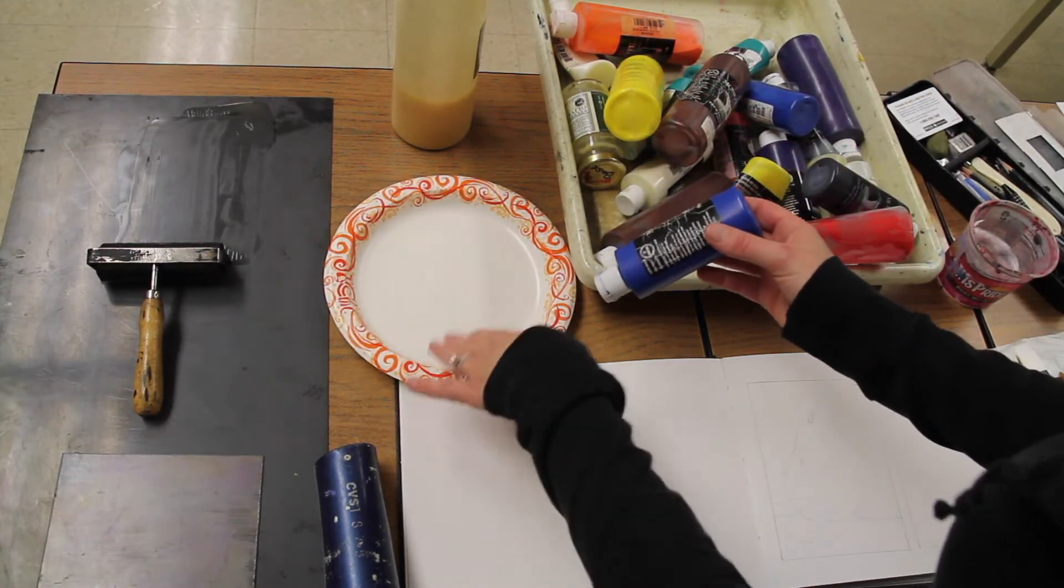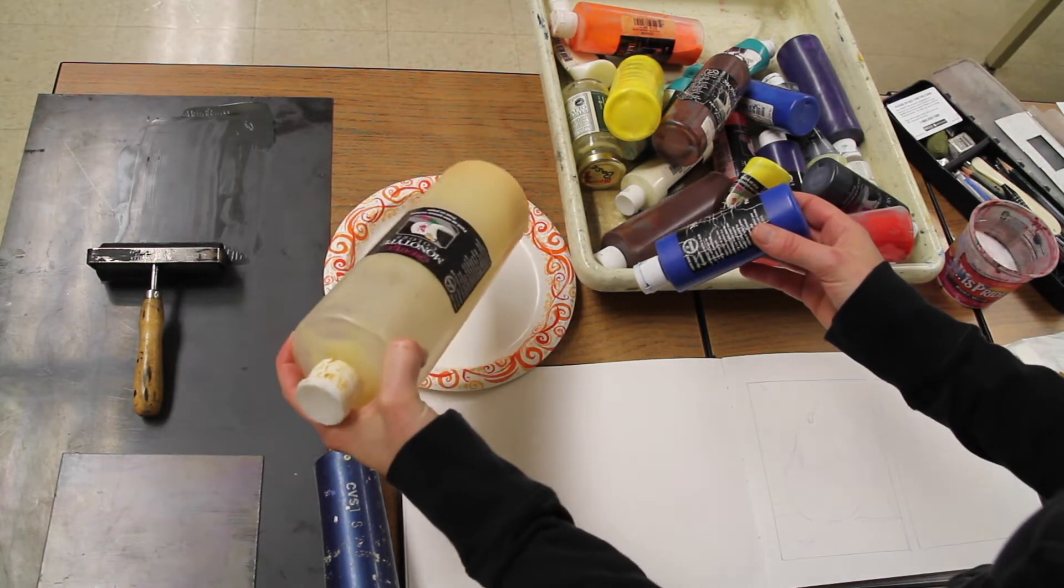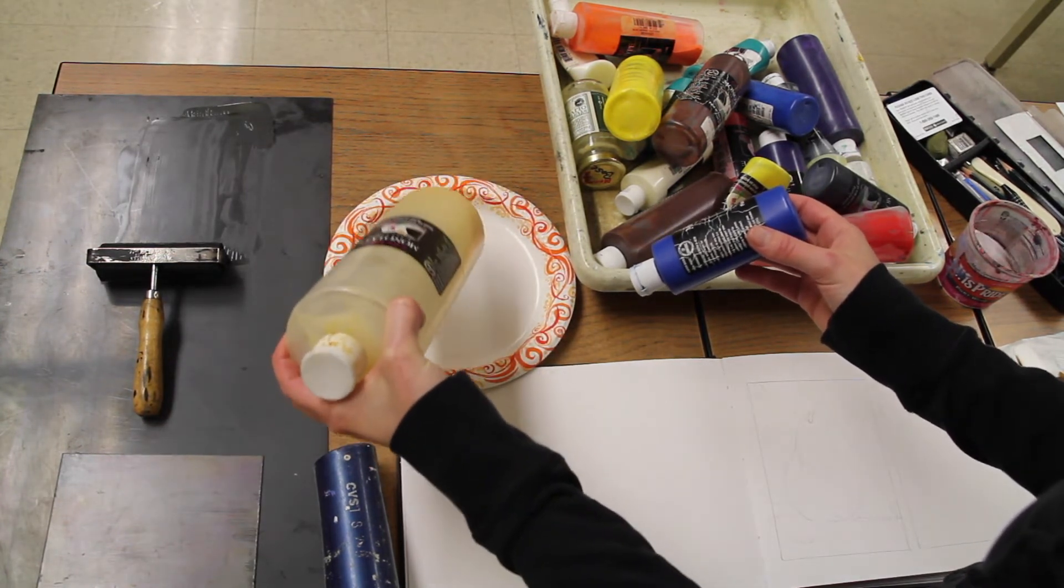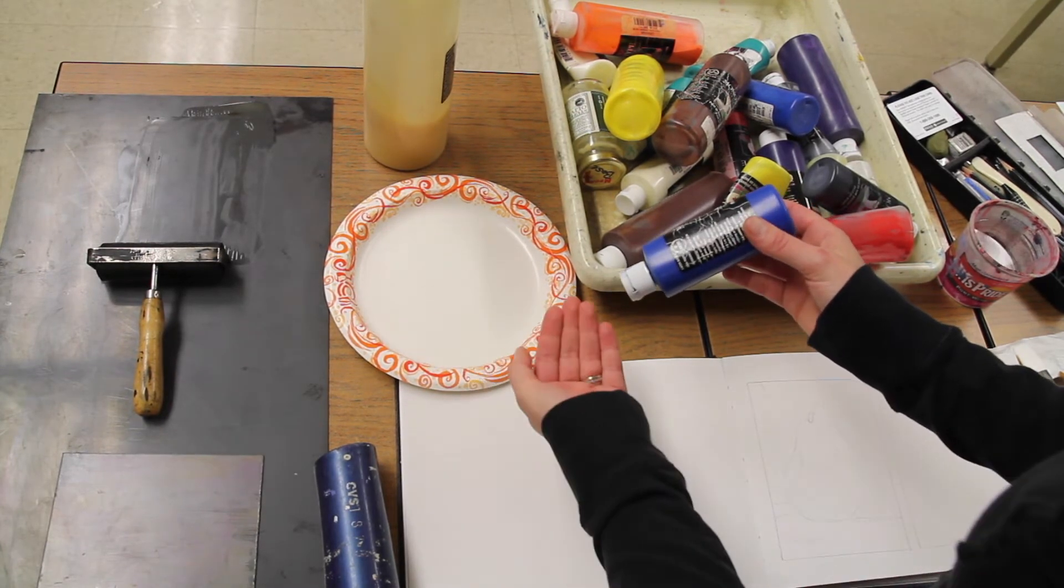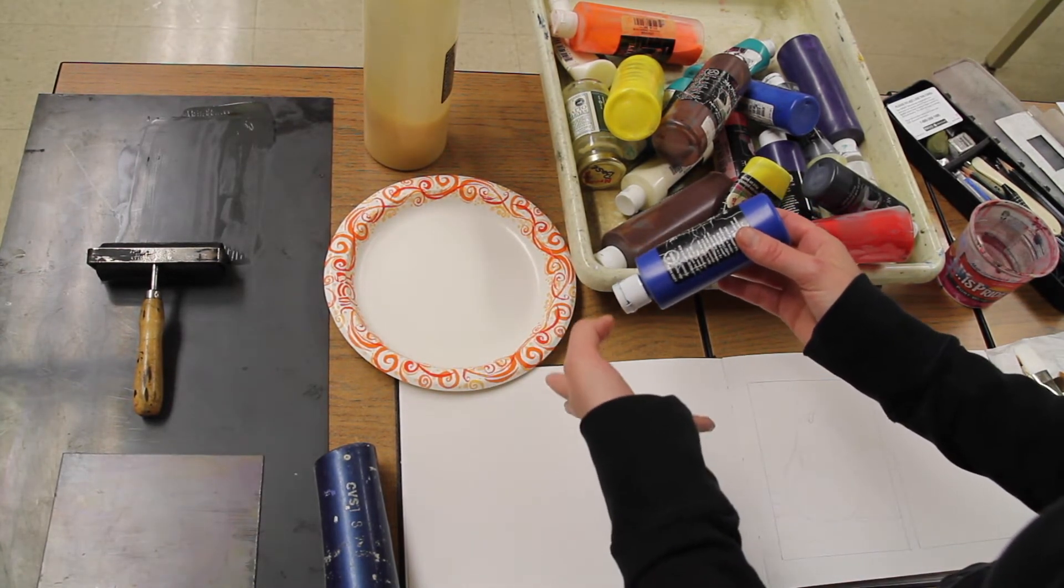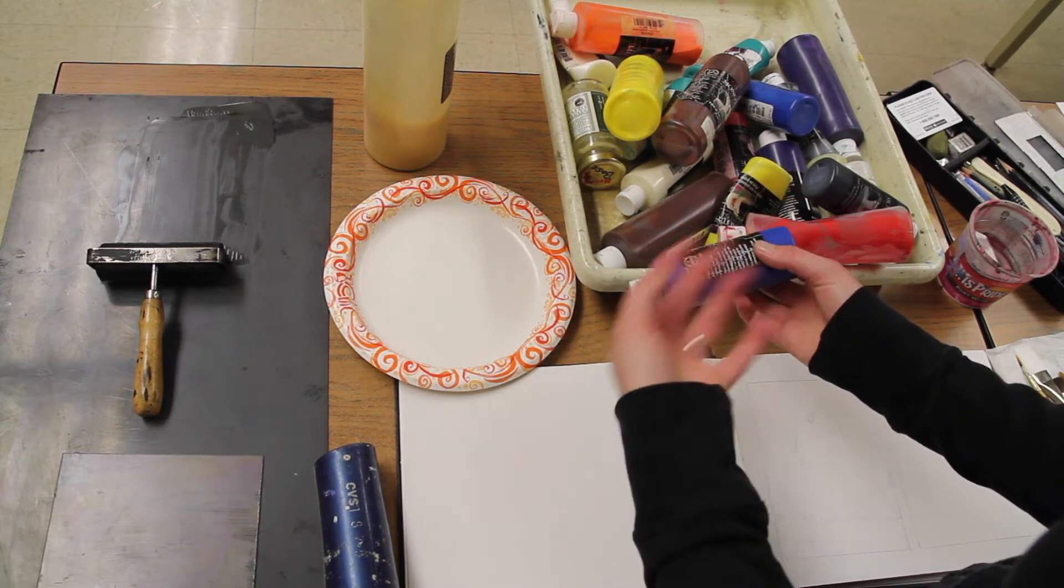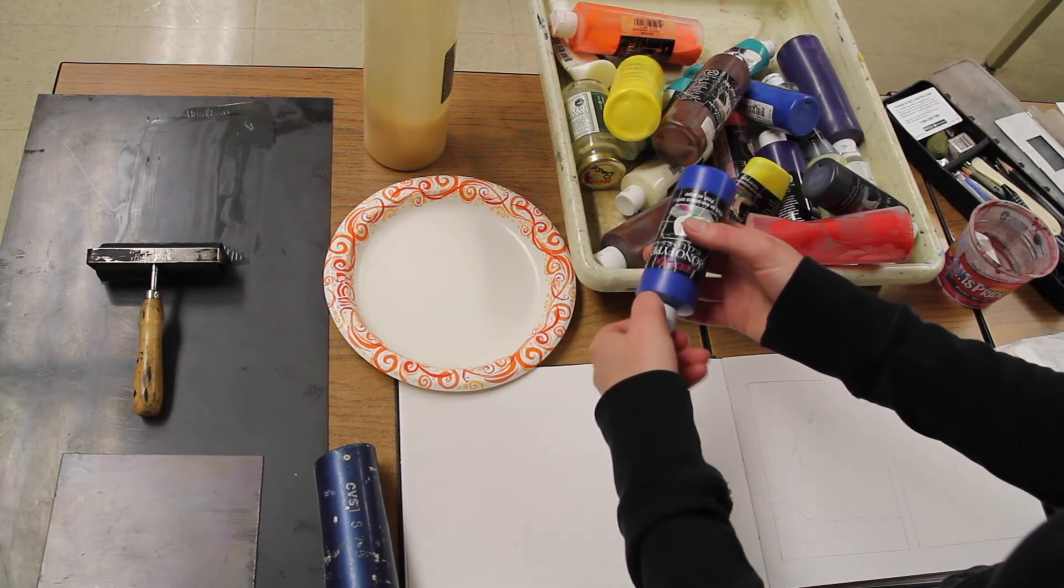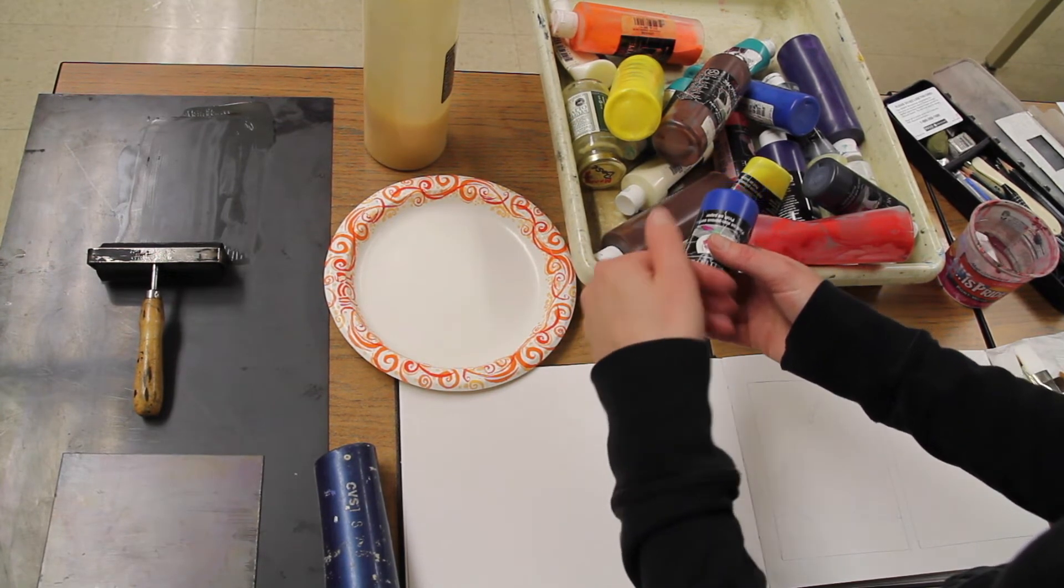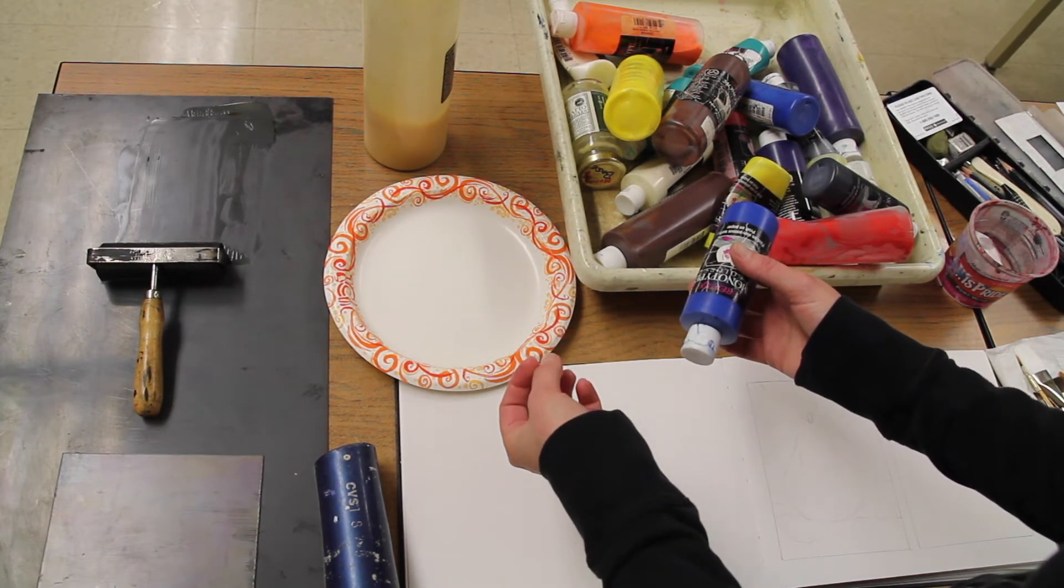As far as the inks go, squirt a little bit of each color you want out on your plate, and also squirt a little bit of the monotype base in each color. I like using a plate because it allows me to mix inks in the middle. I'm not a big fan of when artists use colors straight out of the bottle. I think it's more sophisticated when you use mixed colors - colors mixed by observing, or colors mixed specifically to go along with a particular color scheme you have in mind.